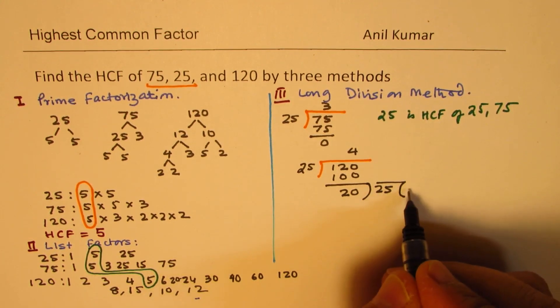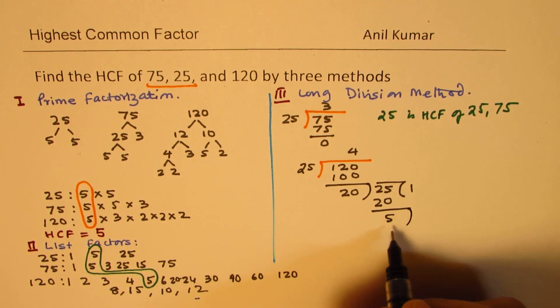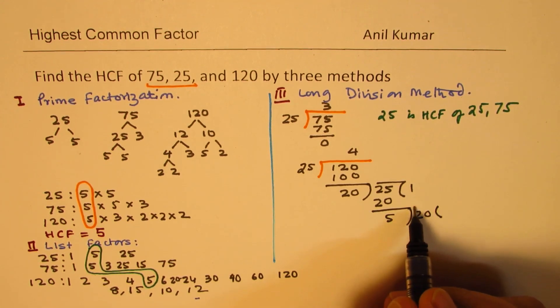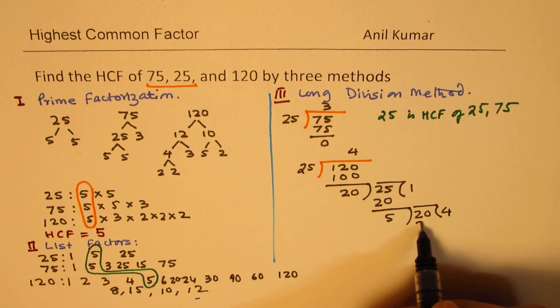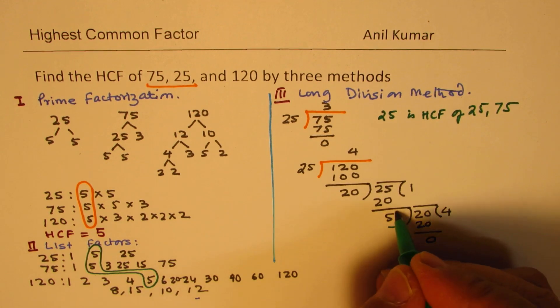So, when you do 1 times is 20, and you are left with 5 and we divide 5 into 20, it goes 4 times. And so, clearly, the highest common factor is 5.